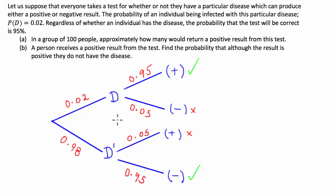That's our tree diagram sort of figured out, and we can use this to figure out what is going on in A and B. Let's start with part A. It says, in the group of 100 people, approximately how many would return a positive result from this test? So we're looking for the probability that the test is positive.